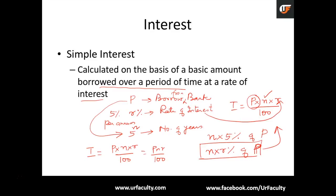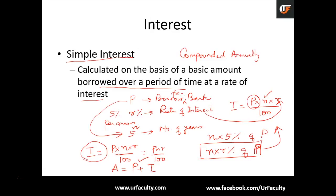It is easy to remember. You need to catch the keyword 'simple interest', or else the question will specifically mention 'compounded annually.' Now, what do we find here? We find the interest — but is that the final answer? No. We are supposed to find the amount at the end of N years. The amount A is equal to P plus I. The principal is the actual amount borrowed, and interest is the amount charged by the bank. When you sum both, you know how much you are paying at the end of N years.